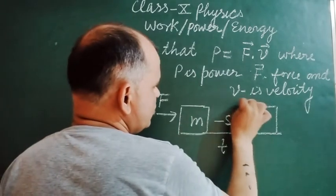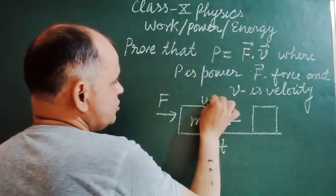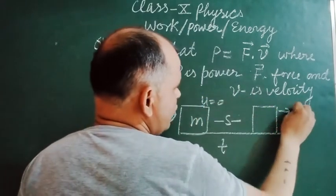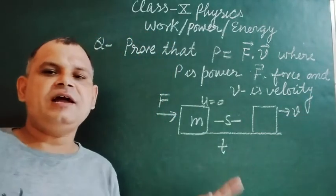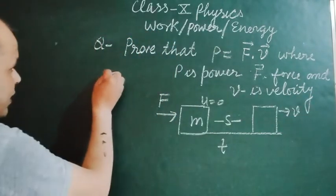And its velocity, initially its velocity is 0 and it got a velocity V after time T. So as you know that power equal to W upon T, work.